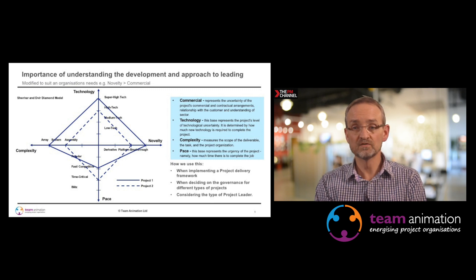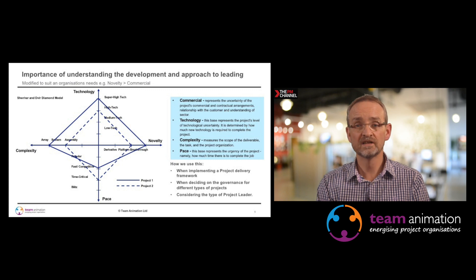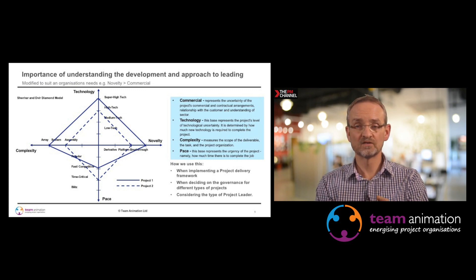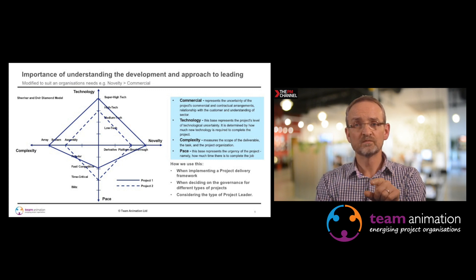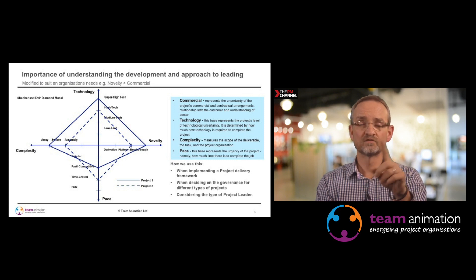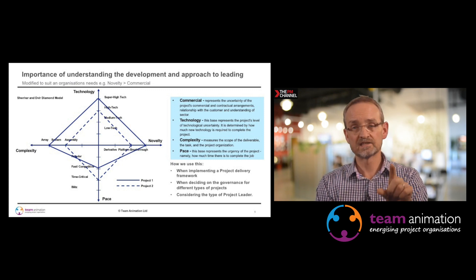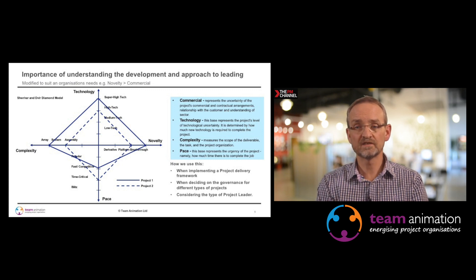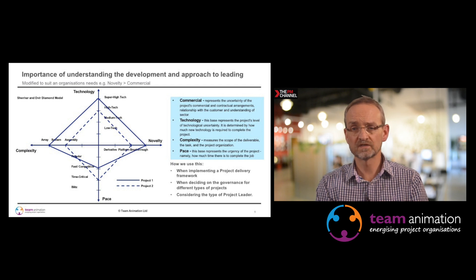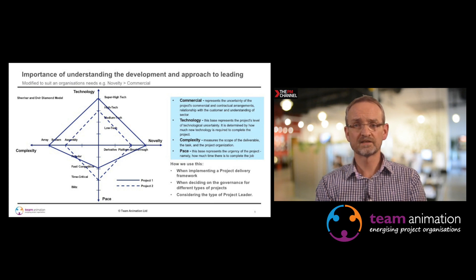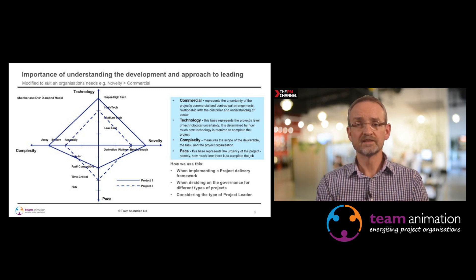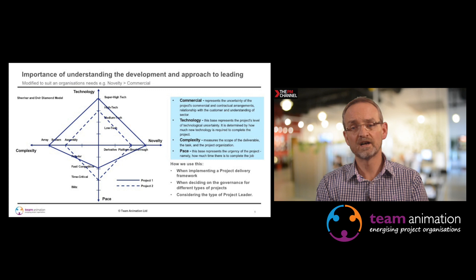Here are some of the ways we use it. If you're implementing a project delivery framework, a project which sits right in the centre — a kind of one, one, one, one — would be a very different type of project from one that goes right around the external contour of the diamond. Very different type of project, and you should have a very different type of delivery approach for that. You may also use it for the governance approach on a project: depending on the shape of the project, that determines what level of governance you apply, and I'll give you an example of that in a moment.